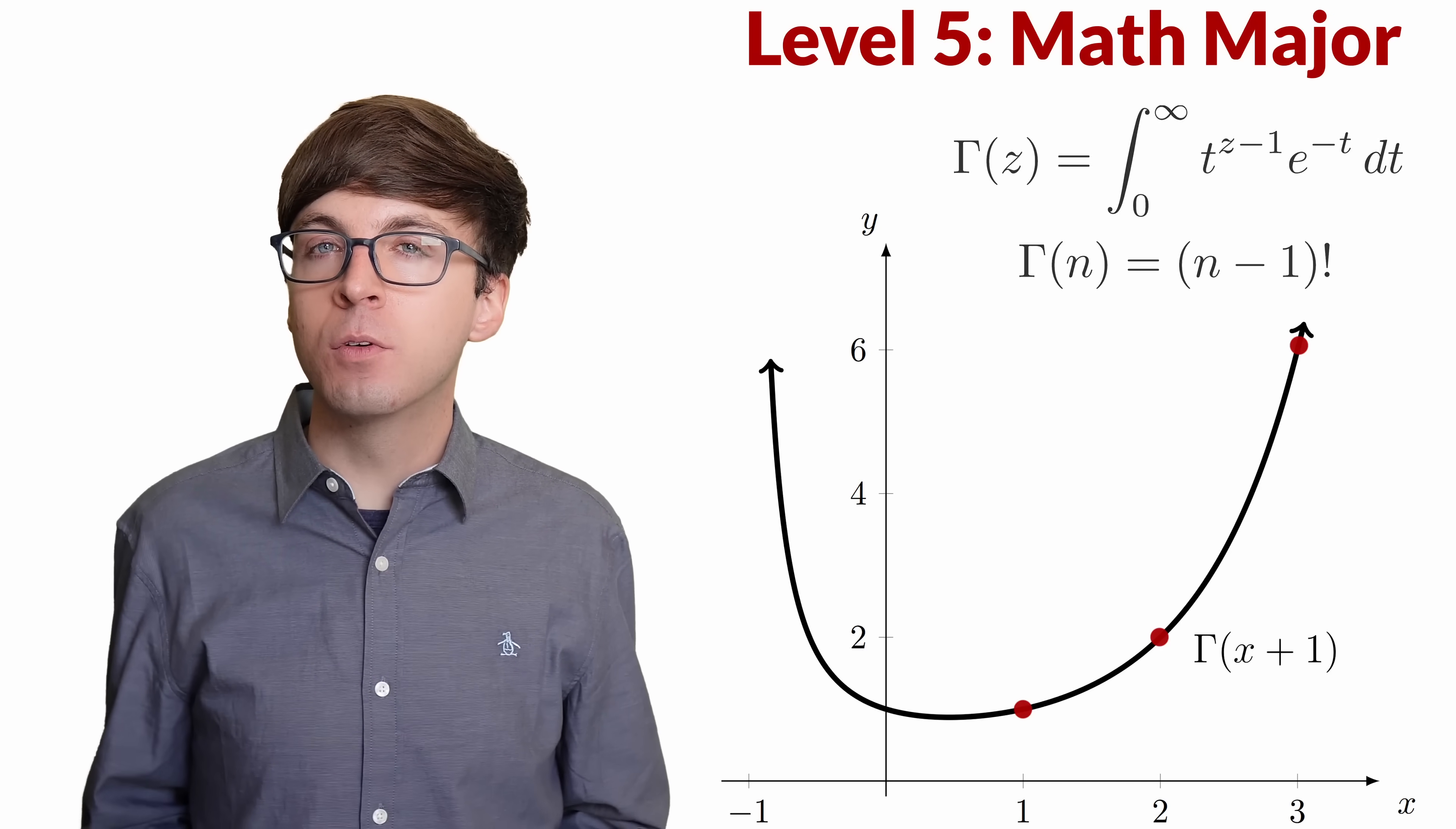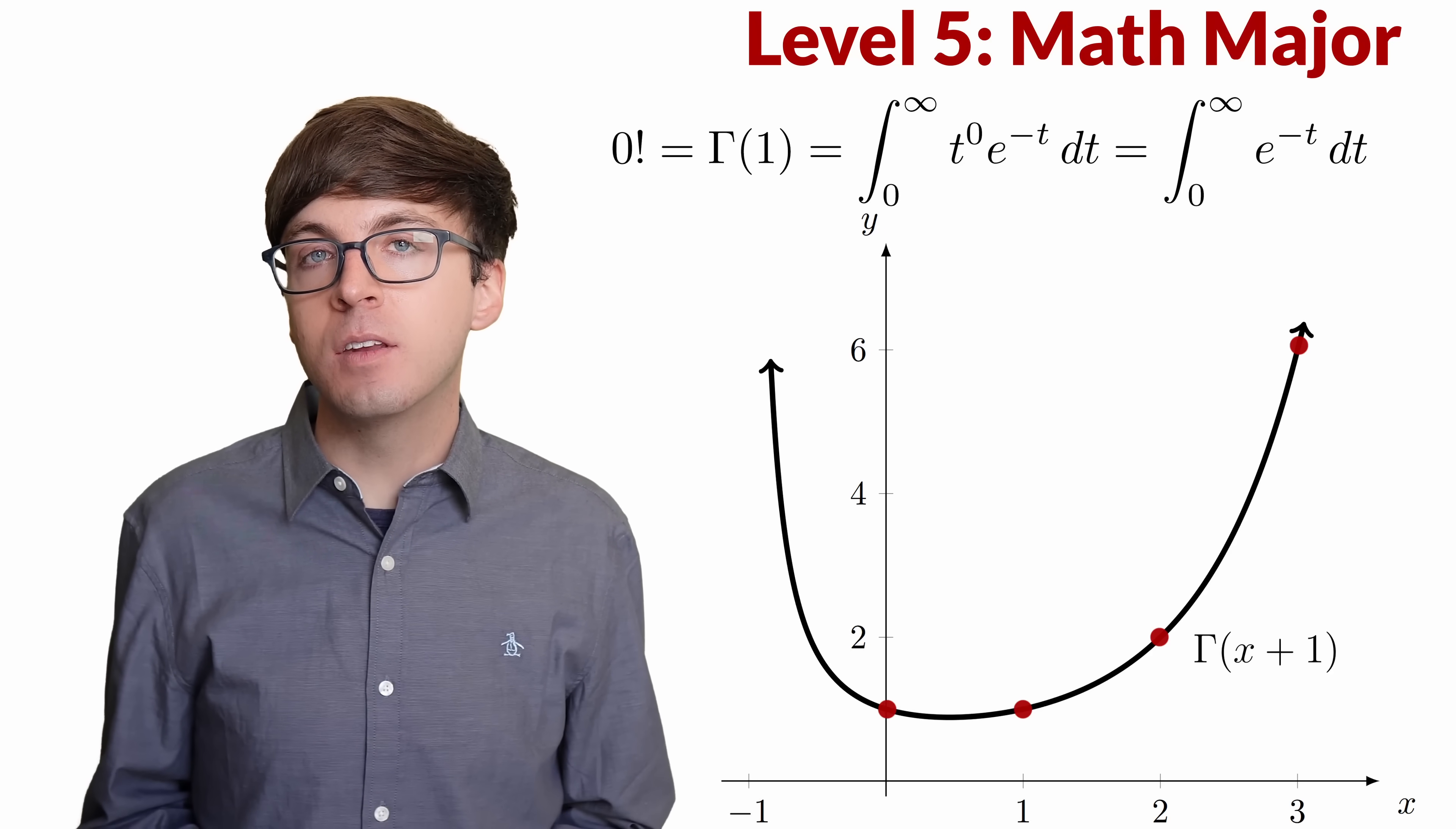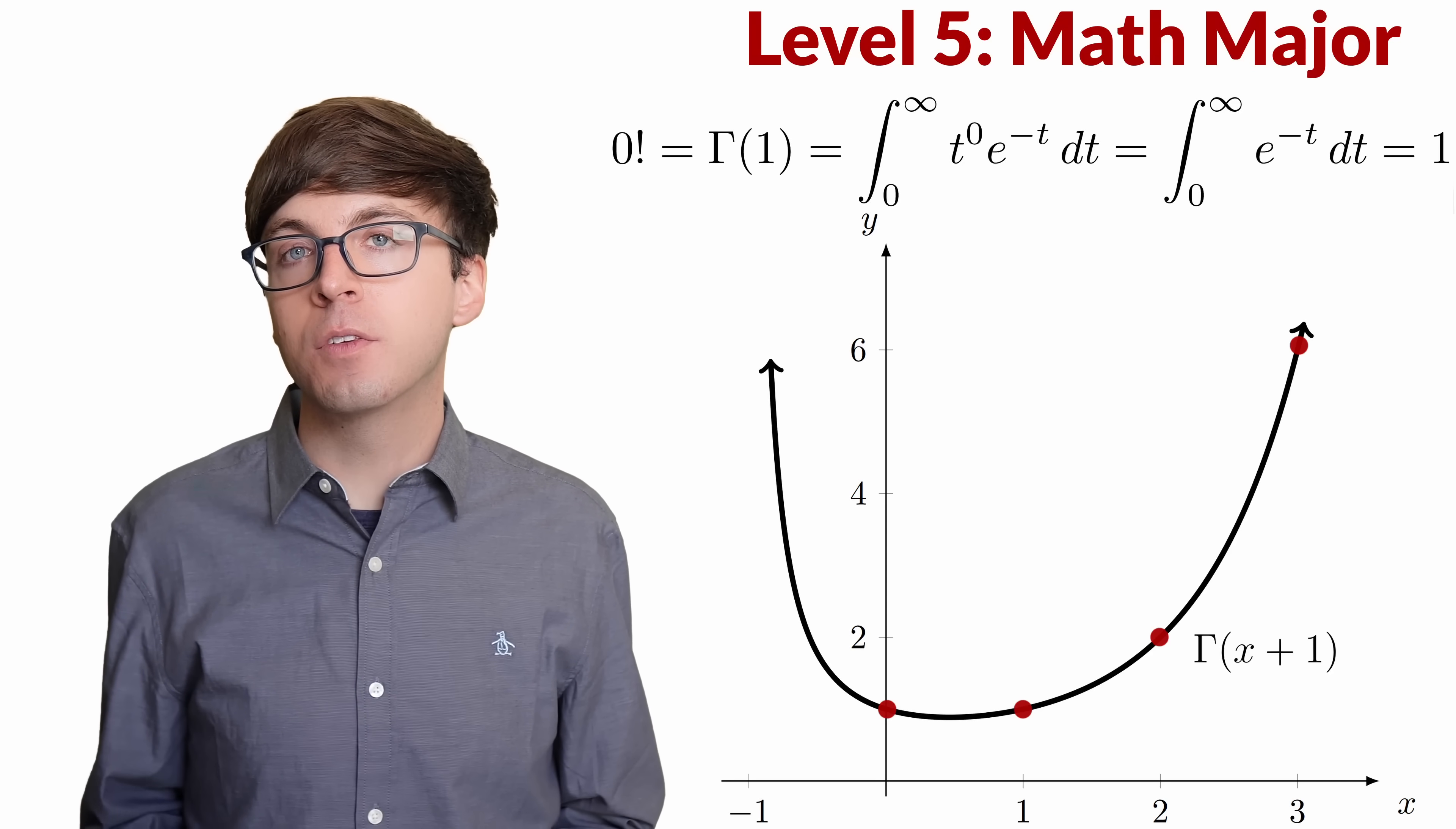Now what about 0 factorial? This matches with gamma of 1. This integral is particularly nice because the first factor is t to the 0, which is 1. So we get the integral from 0 to infinity of e to the negative t dt. This is a classic calculus problem, and this integral equals 1. So the gamma function provides another reason to define 0 factorial to be 1.